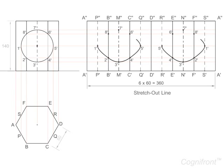After joining the above points by a smooth curve, we get the development of the lateral surface of the prism with the shape of the holes in it.